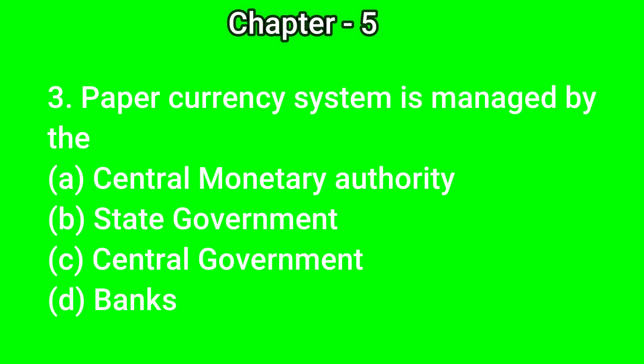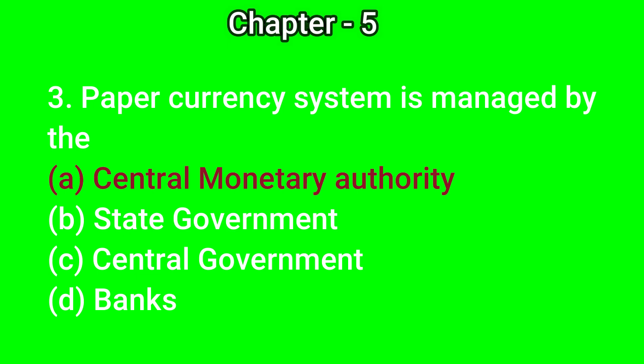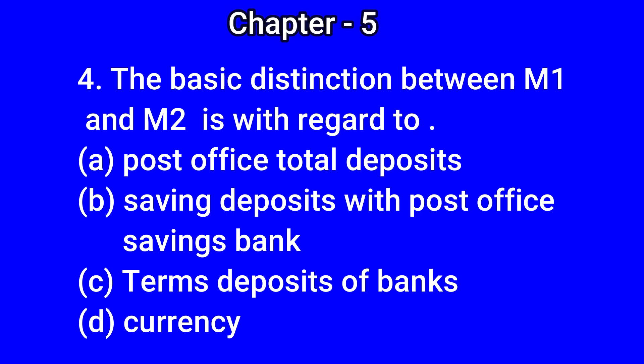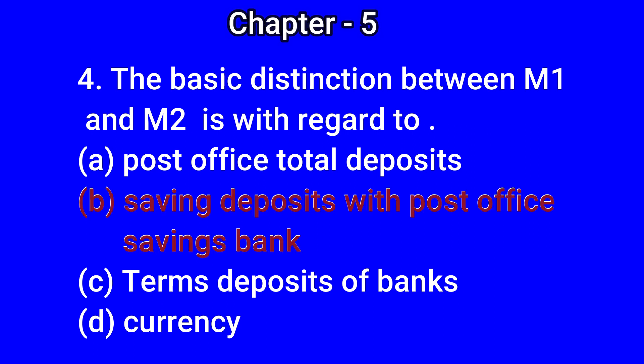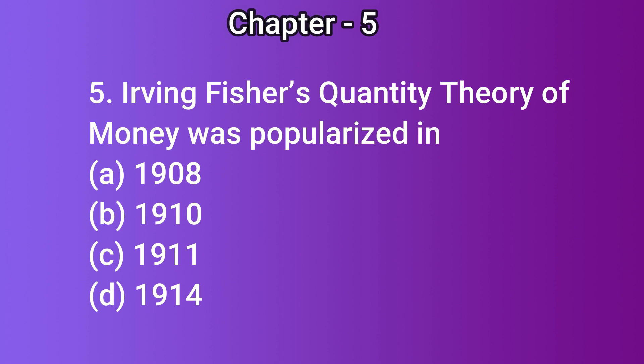Question number 3: Paper currency system is managed by — A) the central monetary authority, B) state government, C) central government, D) banks. The correct answer is A) central monetary authority. Question number 4: The basic distinction between M1 and M2 is with regard to — A) post office total deposit, B) savings deposit with post office savings bank, C) term deposits of banks, D) currency. The correct answer is B) savings deposit with post office savings bank.